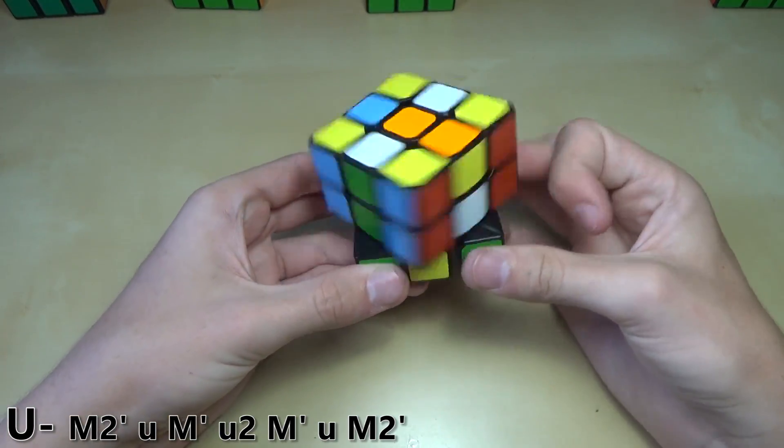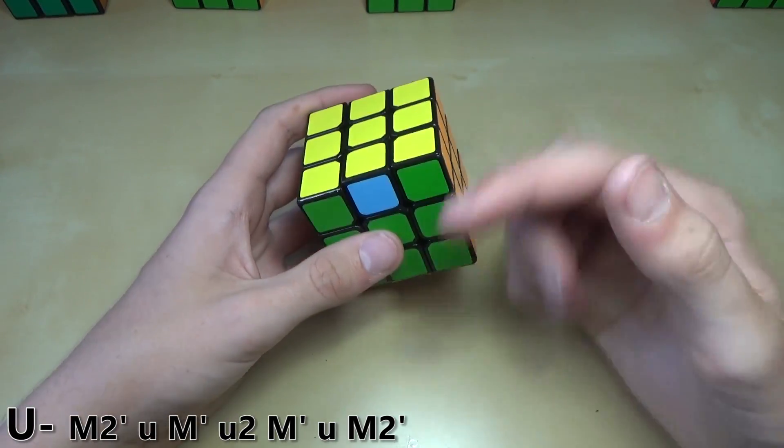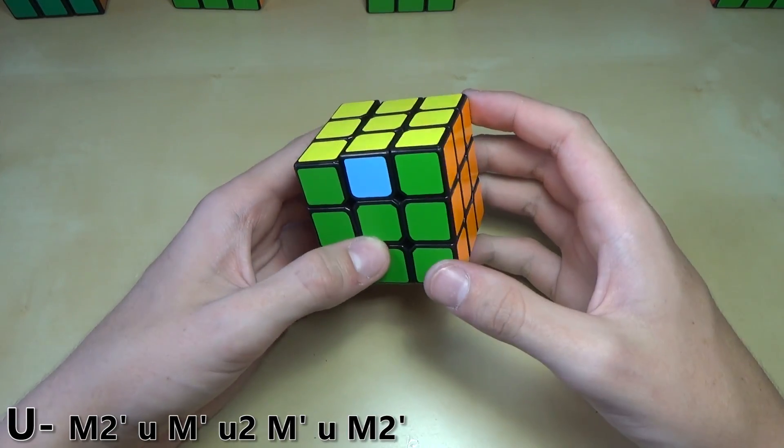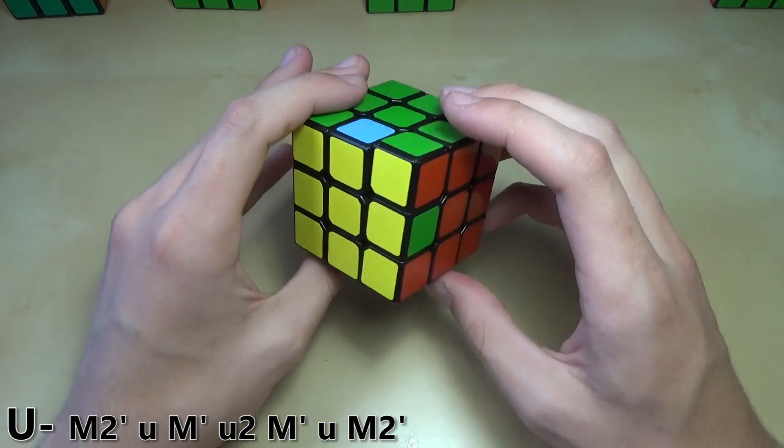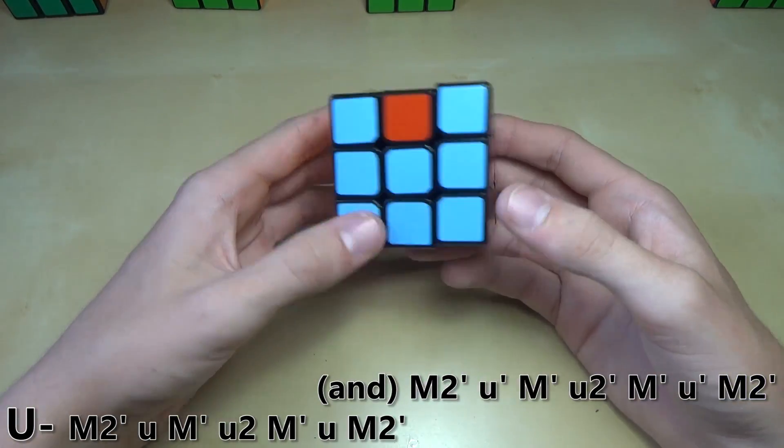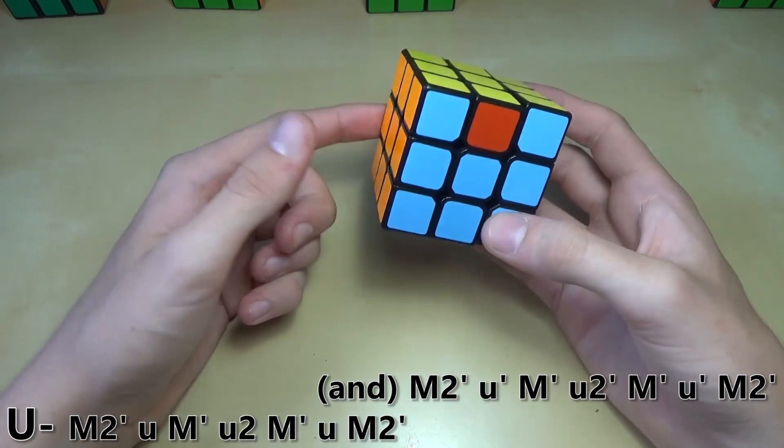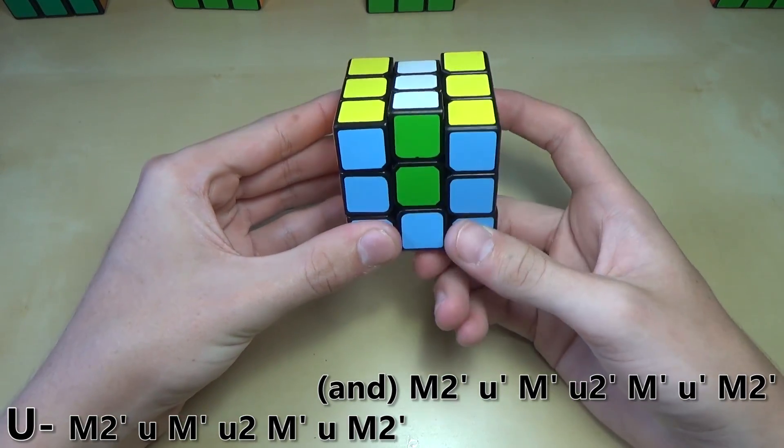A kind of interesting thing about this algorithm and the reason that I didn't just write U-B down there, I just wrote U, is because you can actually do the same thing for the U-A-perm like this. You have to do the M2s with your right hand and the Us with your left hand. So it goes something like this.